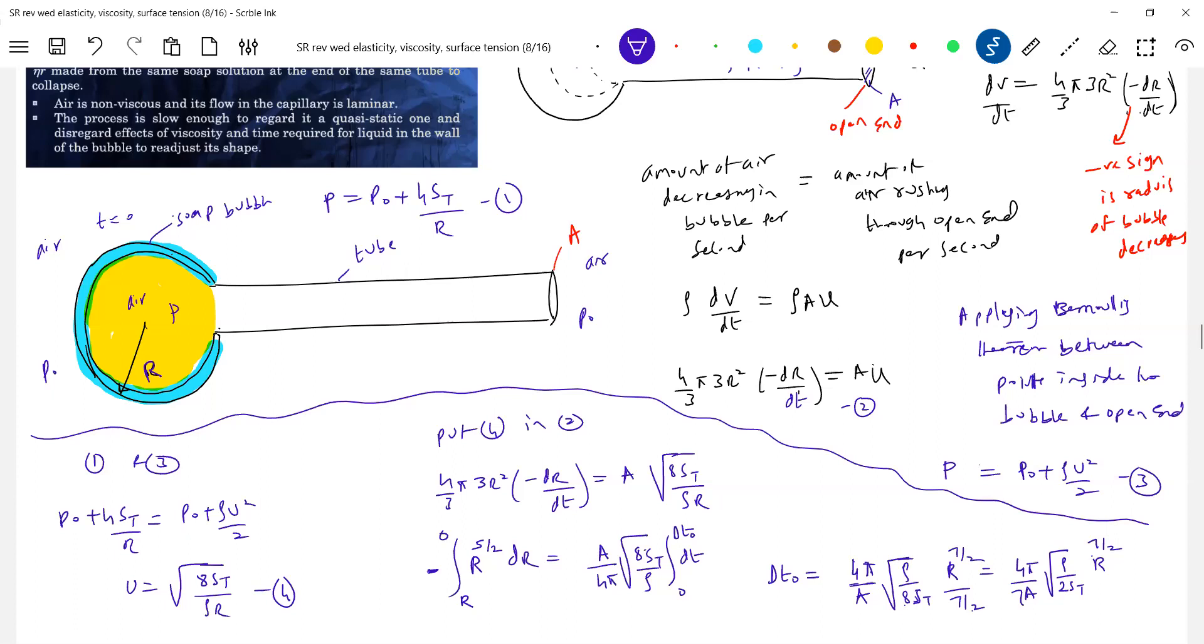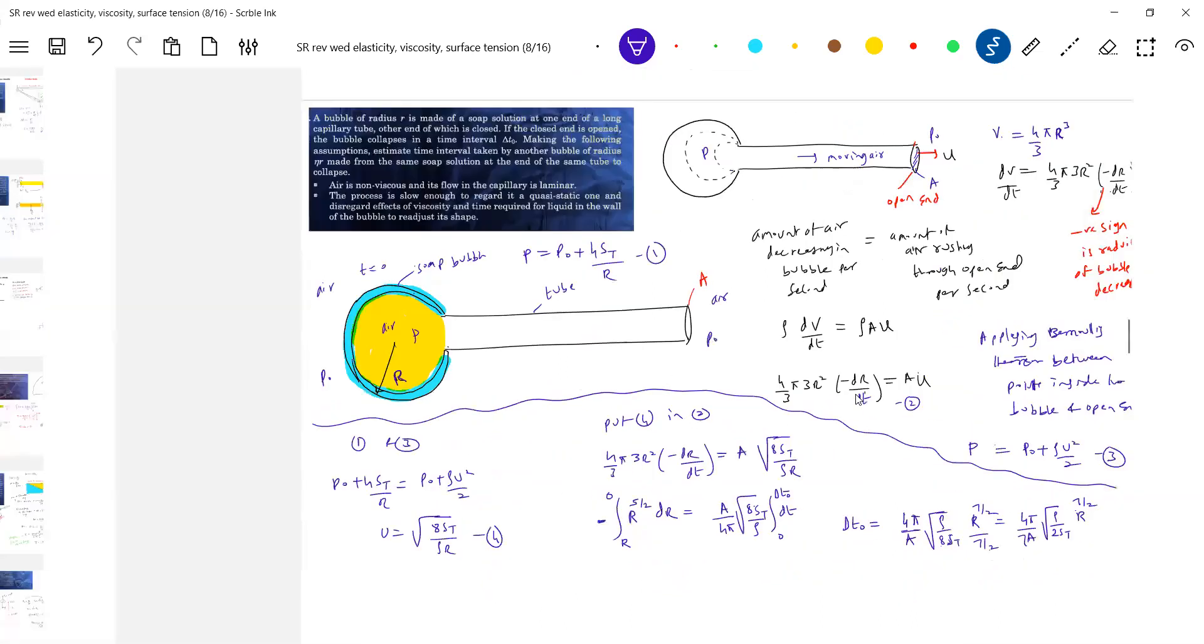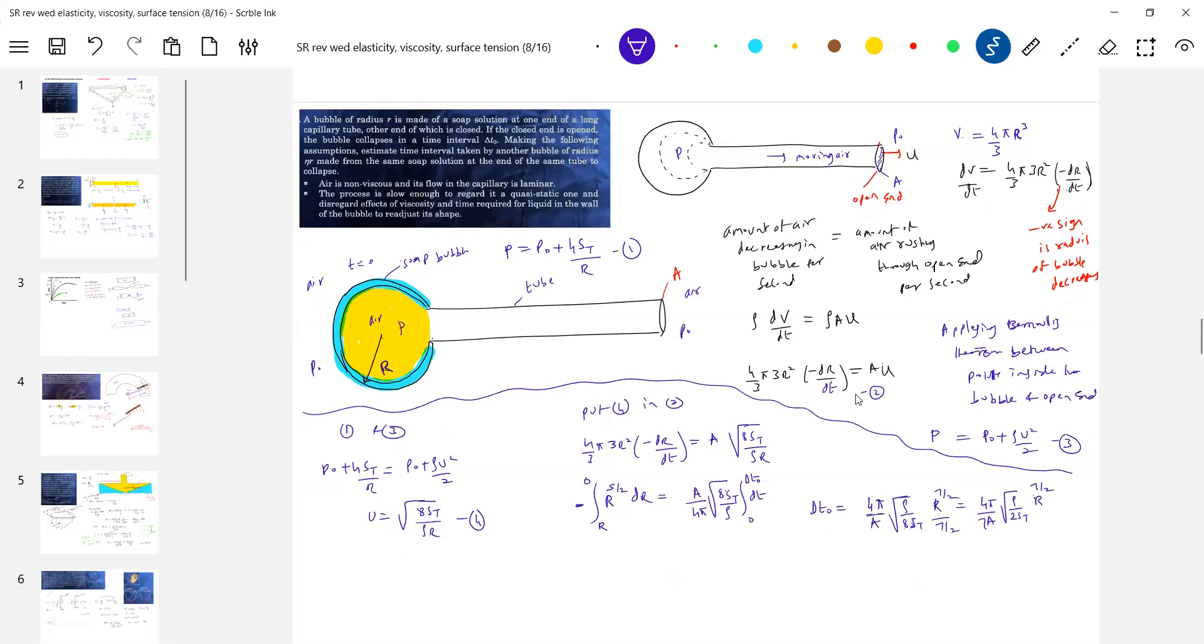Now you compare. When the radius becomes R to E to R, then it's asking what can be the relationship. There's one problem. Very, very important. The bubble will not collapse. It will collapse gradually. In fact, it will take some time.